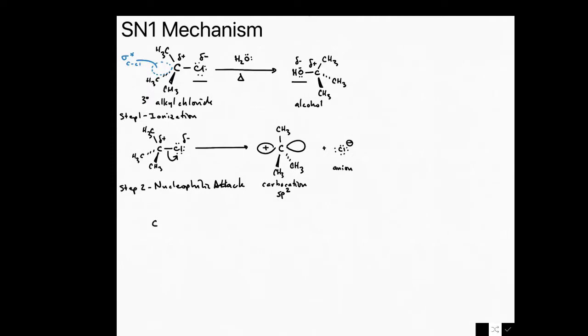So let's redraw our carbocation, again realizing that it's sp2 hybridized. So it's positively charged. It's a Lewis acid. Our Lewis base is water. The arrow is going to be driven by the lone electron pair. The water can attack either lobe of this p-orbital.